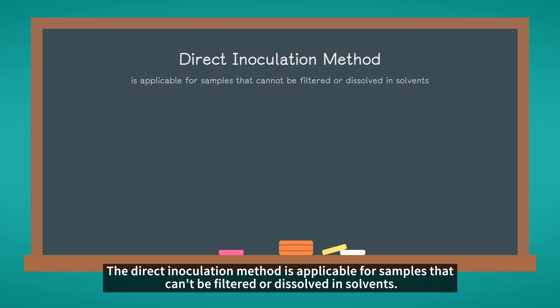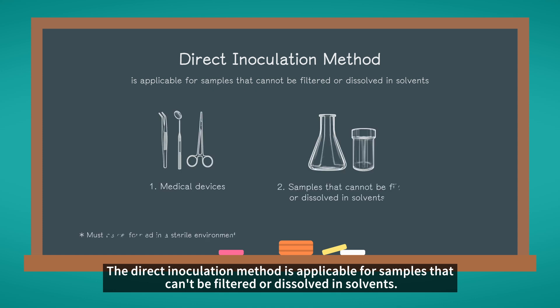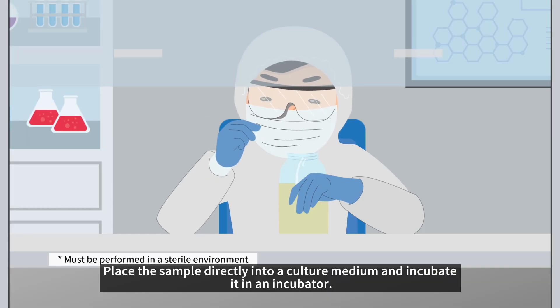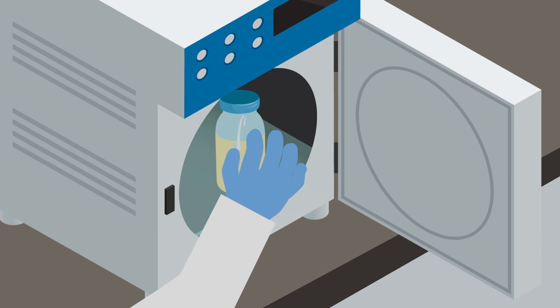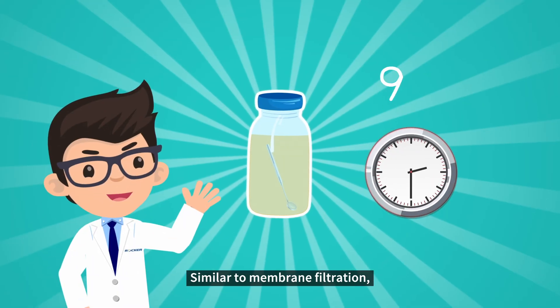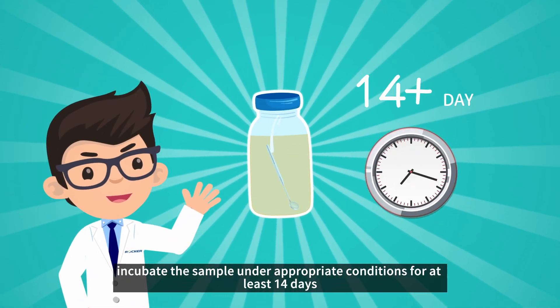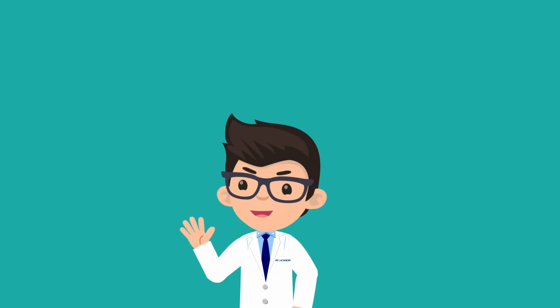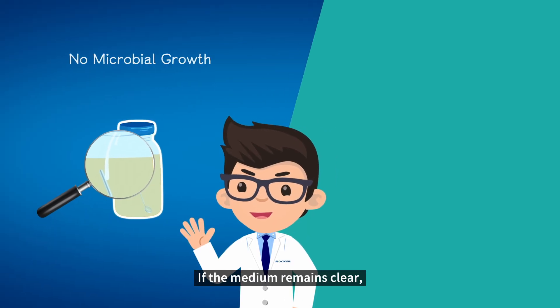The direct inoculation method is applicable for samples that can't be filtered or dissolved in solvents. Place the sample directly into a culture medium and incubate it in an incubator. Similar to membrane filtration, incubate the sample under appropriate conditions for at least 14 days and observe the medium.